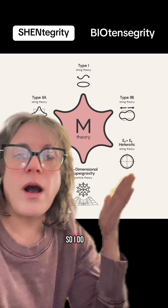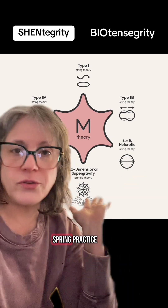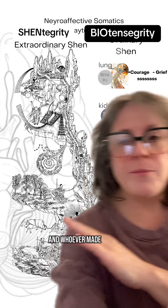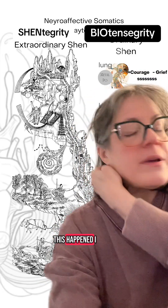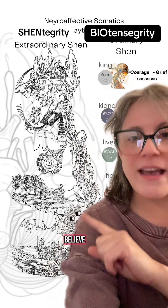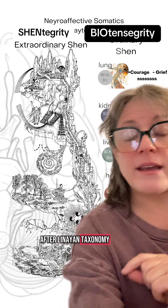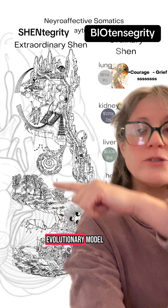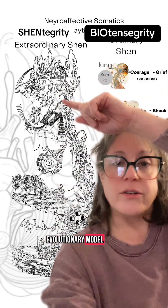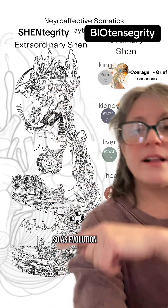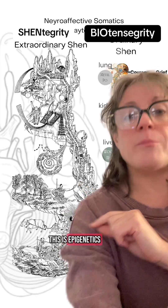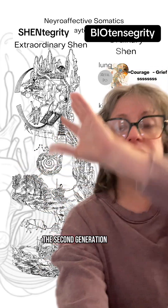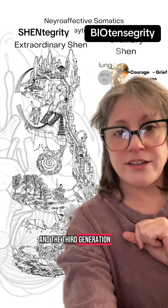So I do spring practice. And whoever made this chart — this happened, I believe, after Linnaean taxonomy in biology. This is an evolutionary model. As evolution, this is epigenetics. This is the first generation, the second generation, and the third generation.